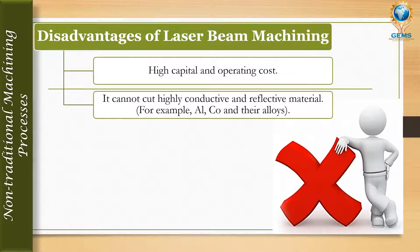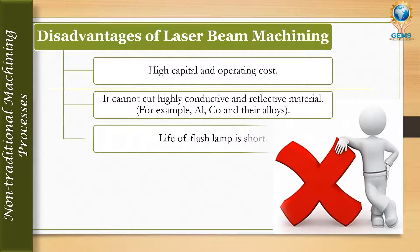Highly conductive materials may get melted uncontrollably when the laser beam is incident on them, and reflective materials will scatter the beam back, preventing the desired output. Additionally, the flash lamp — an important device in the laser beam machining setup — has a short lifespan and needs to be replaced frequently.